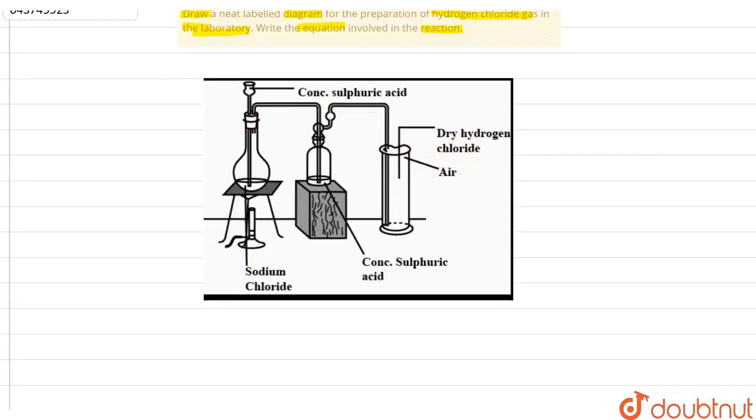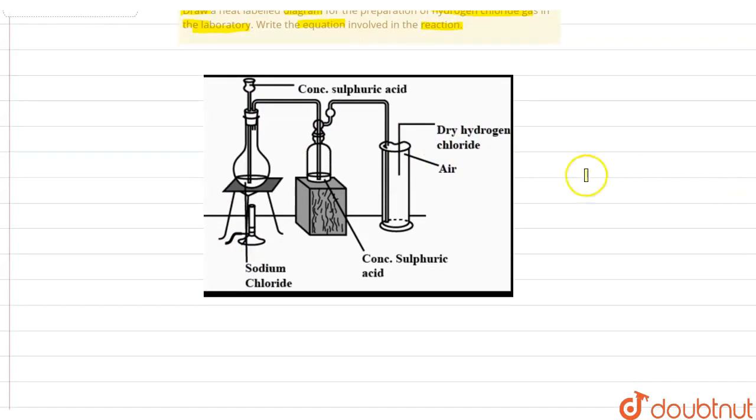So as you can see in this diagram, the reactants are sodium chloride and concentrated sulfuric acid. So from this diagram we can write the reaction involved.